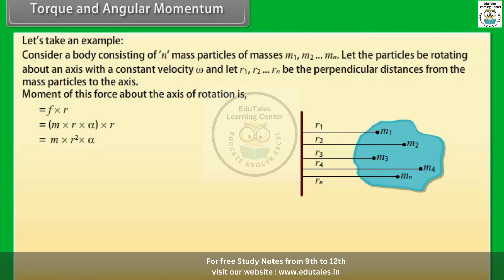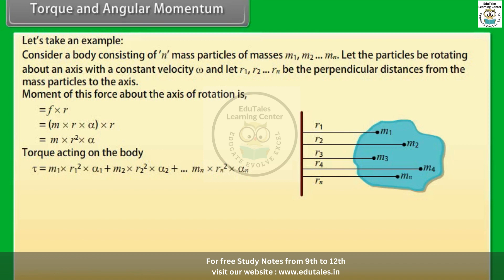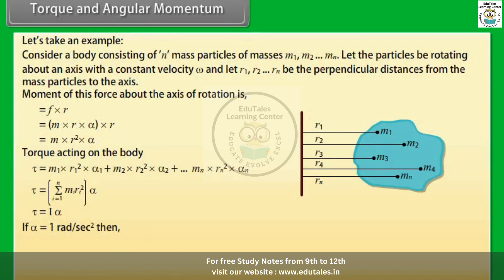The moment equals m·r²·α. Torque acting on the body is given by τ = m₁r₁²α₁ + m₂r₂²α₂ + ... + mₙrₙ²αₙ, which can be written as τ = Σ(mᵢrᵢ²)·α. This gives τ = Iα. If α equals 1 radian per second squared, then I equals τ.